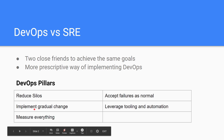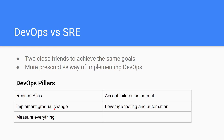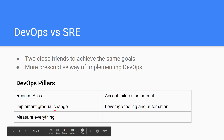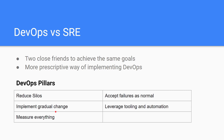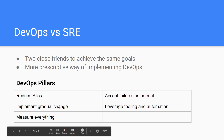The third pillar is implement gradual change. What SRE does here is encourage canary-based deployments. If you're not aware of the term, it means you deploy a change to a small amount of traffic — like 1-2% — just to make sure everything is good with no issues, and then you ramp up and deploy to a wider audience. Google preaches canary-based deployments and that's what they follow.